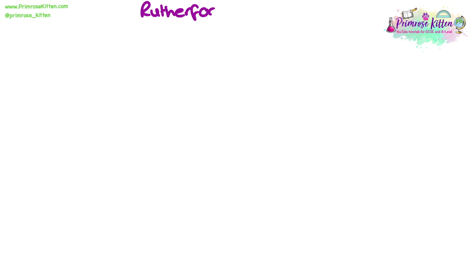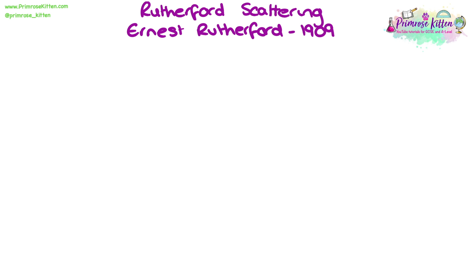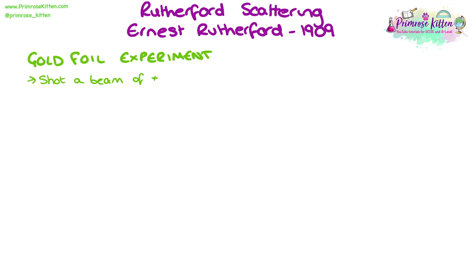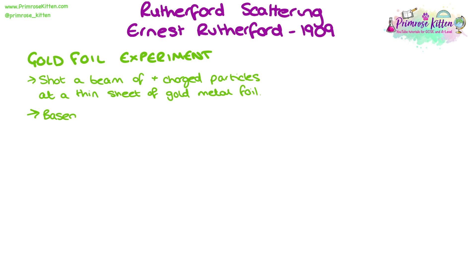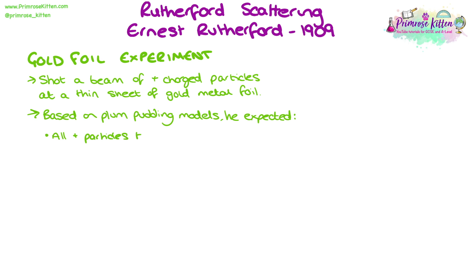The next step was an experiment called the Rutherford scattering, run by Ernest Rutherford in 1909, which led to significant updates to the model of the atom. Also known as the gold foil experiment, Rutherford shot a beam of positively charged alpha particles at a very thin sheet of gold metal foil. He made a prediction based on the plum pudding model — that all of the positively charged alpha particles would pass straight through the sheet of foil.